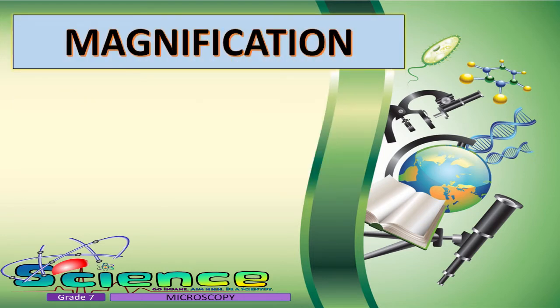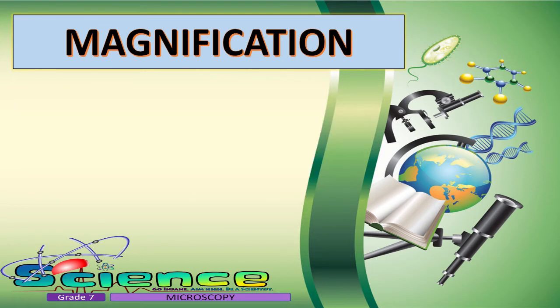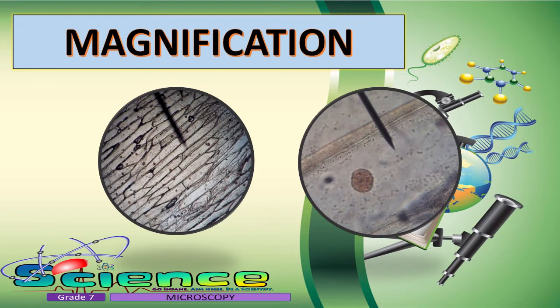When we say magnification, it describes how much larger an object appears when viewed. Observe the structure of an onion cell viewed under a microscope on the low-power objective — as you can see, it is small. When we want to see it better, we can increase its magnification or change to the high-power objective, and you can see the structure looks bigger. That is the magnification, or the magnifying power, of the microscope.